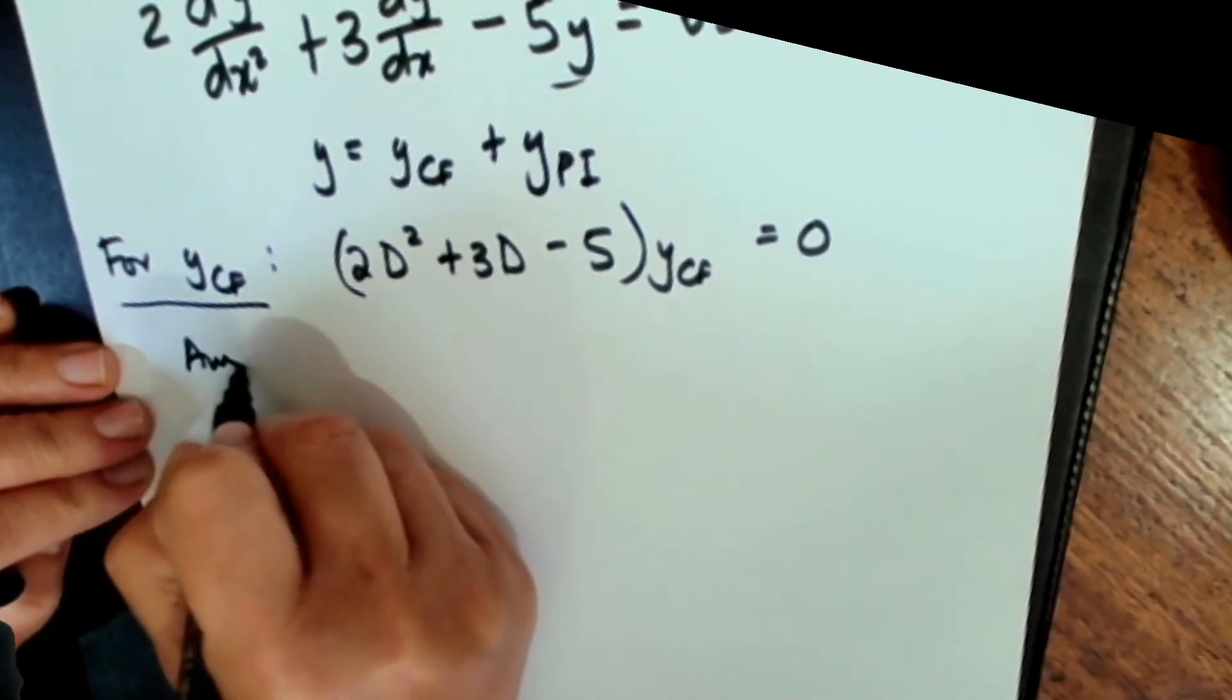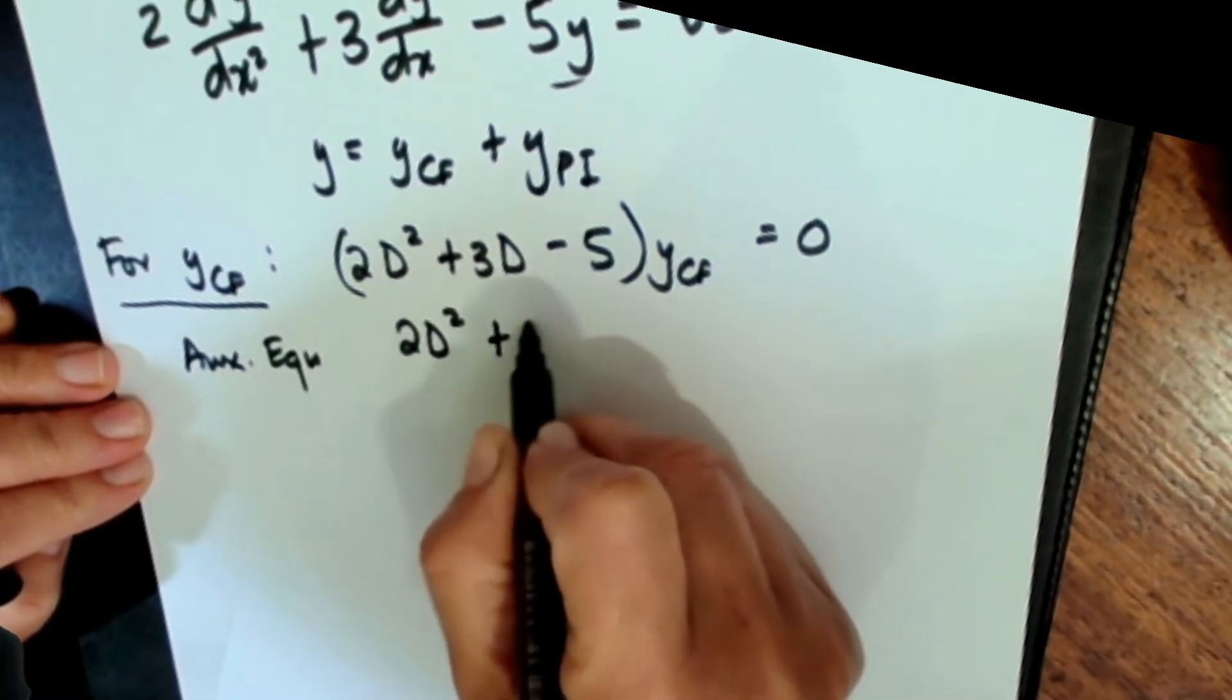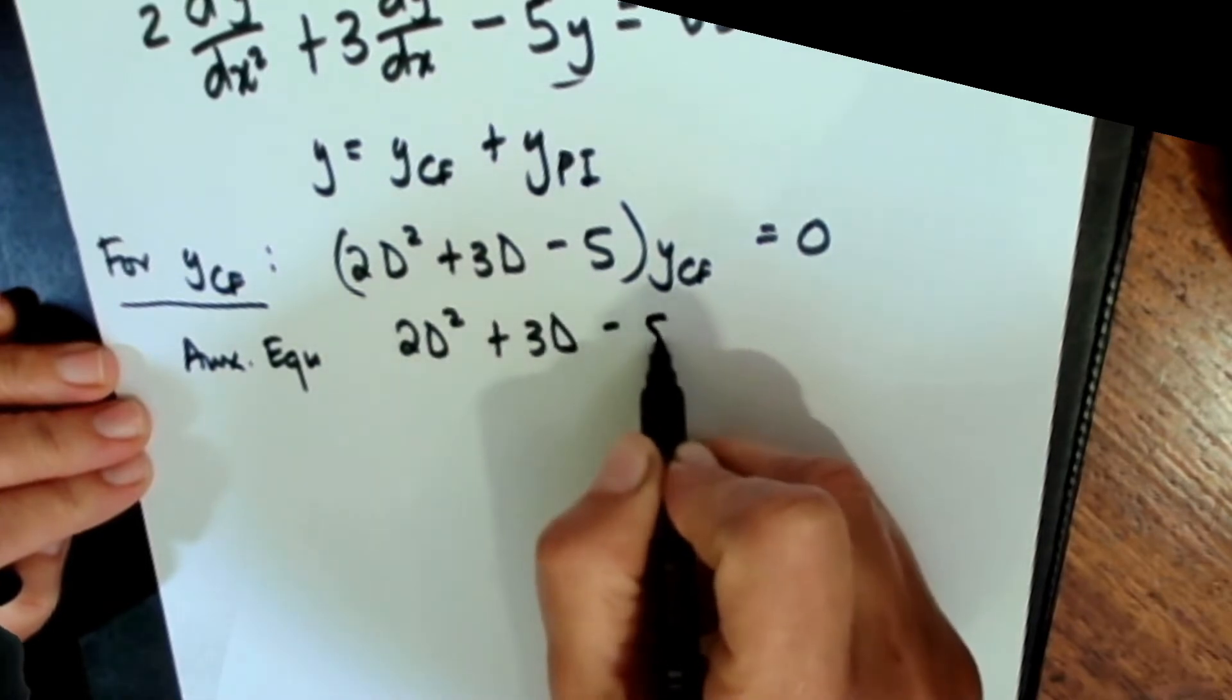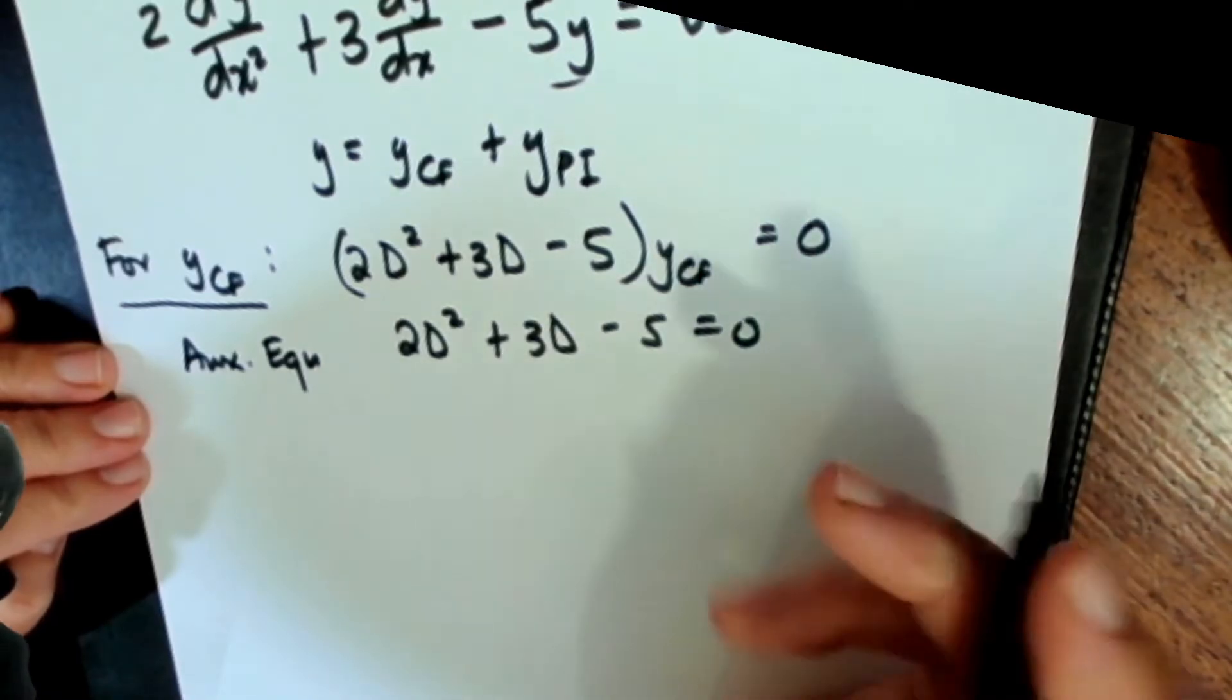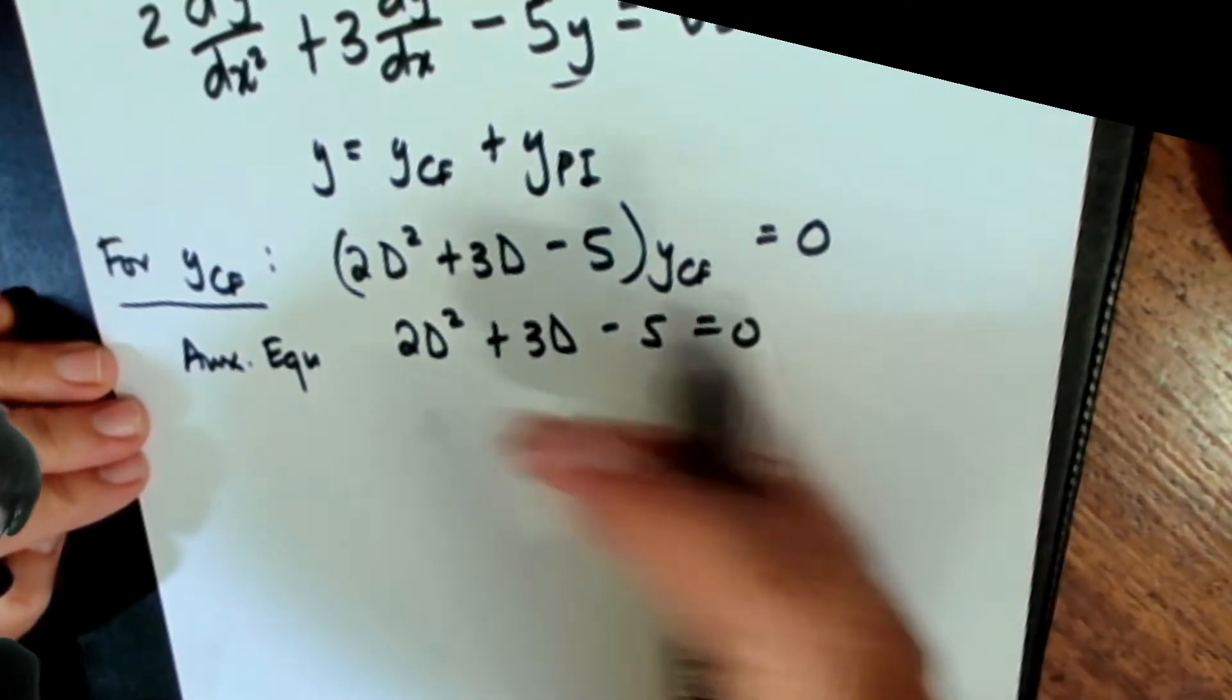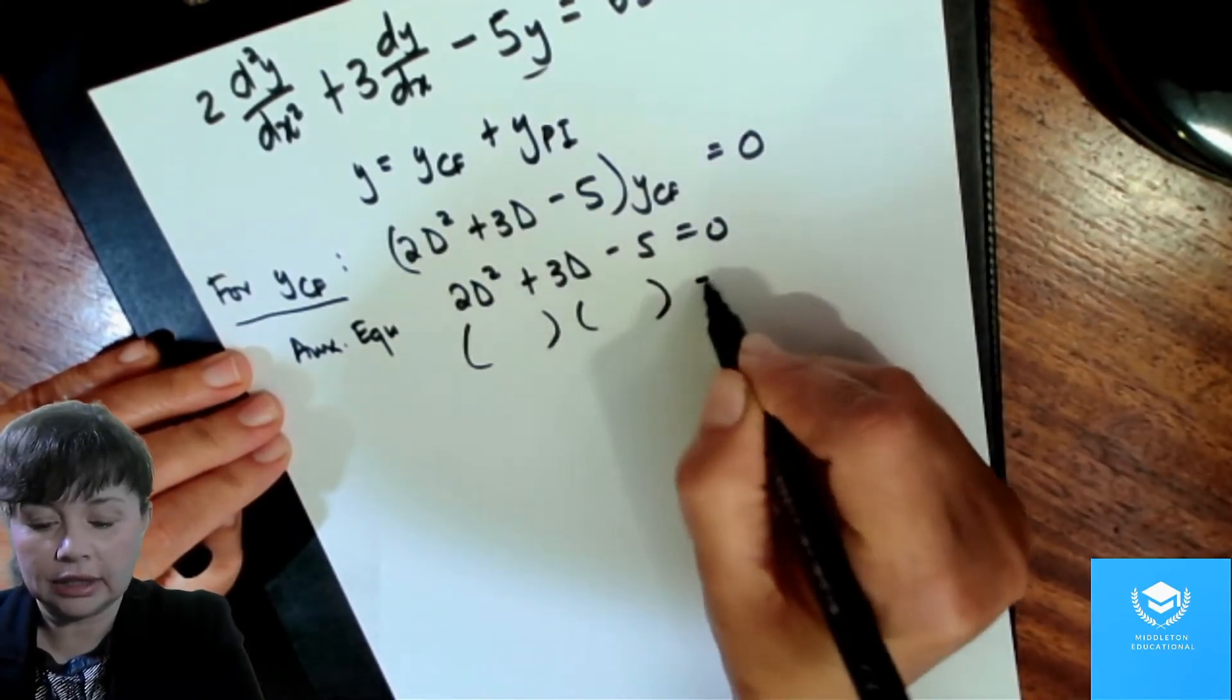So then our auxiliary equation is going to be 2d squared plus 3d minus 5 equals to zero. And this one you can solve using the quadratic formula or if you want to you can just prime factorize. So I'm going to prime factorize.